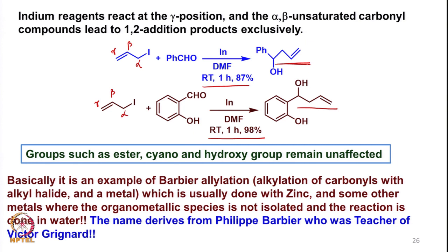Interestingly, in such cases ester groups, cyano, and hydroxy groups remain unaffected, so the reaction is fairly mild. It is actually an example of what is called Barbier allylation — the alkylation of carbonyl groups with alkyl halides in a metal. It is usually done with zinc, but some other metals can also be used. The name actually derives from Philip Barbier, who was the teacher of Victor Grignard, who introduced the Grignard reaction. So it is a very interesting Barbier allylation, which is very much utilized in organic synthesis.